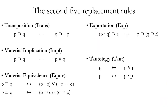Here's a summary of the second five replacement rules. Transposition allows you to move from a conditional P horseshoe Q to swapping the antecedent with the consequent — you add a tilde to the antecedent and to the consequent, or you subtract a tilde from both the antecedent and the consequent.